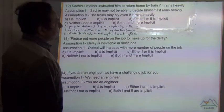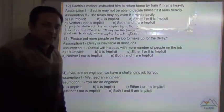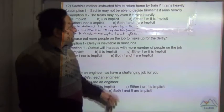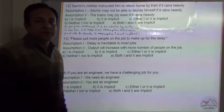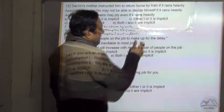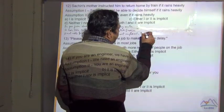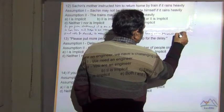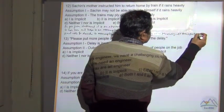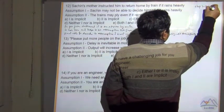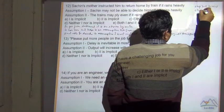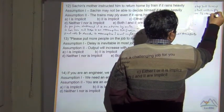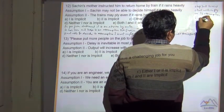Second assumption: the train may ply even if it rains heavily. Yes, this assumption is right. Because when it is raining heavily, other transportation systems may stop. But her mother is assuming that train will still be plying or will be running. So in heavy rain, generally all transports stop but trains still work or ply. So assumption 2 is implicit.